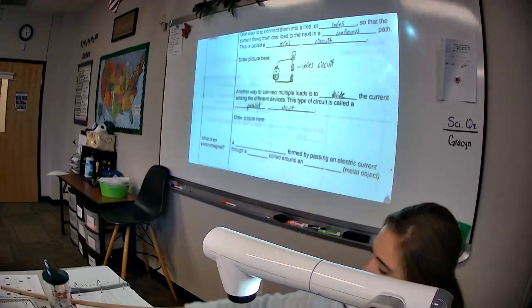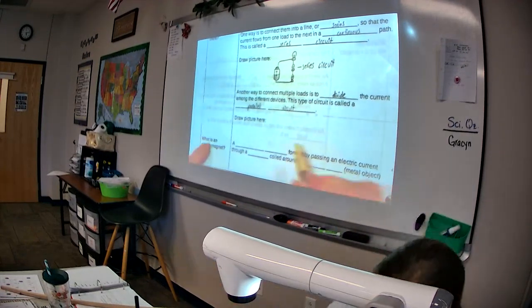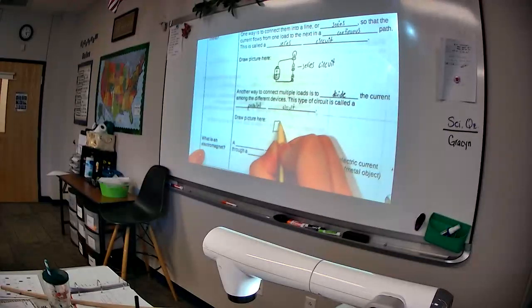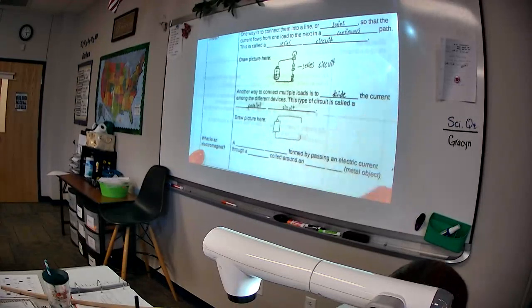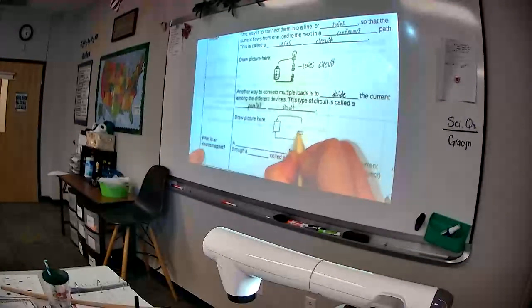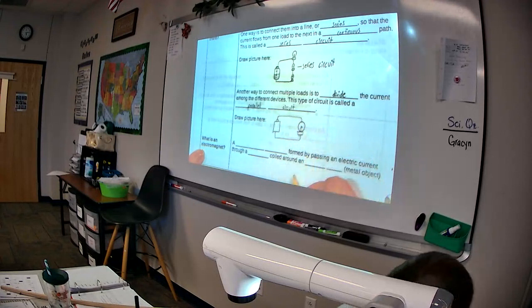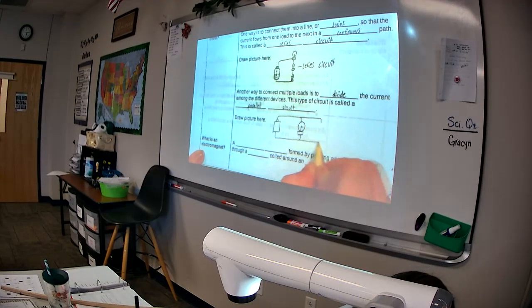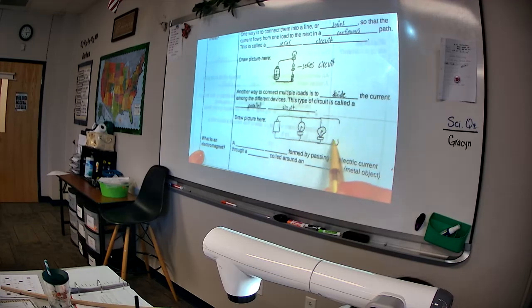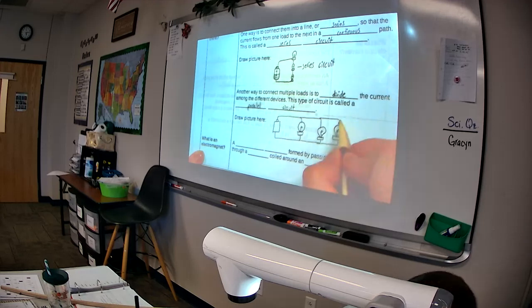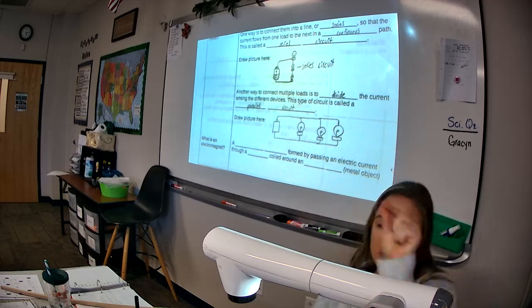Your parallel circuit can look a little different. You'll have your battery, which is your power source for this one. Your light bulbs are much nicer than mine. There's one, two, and three. So that each bulb is on its own path, its own circle.